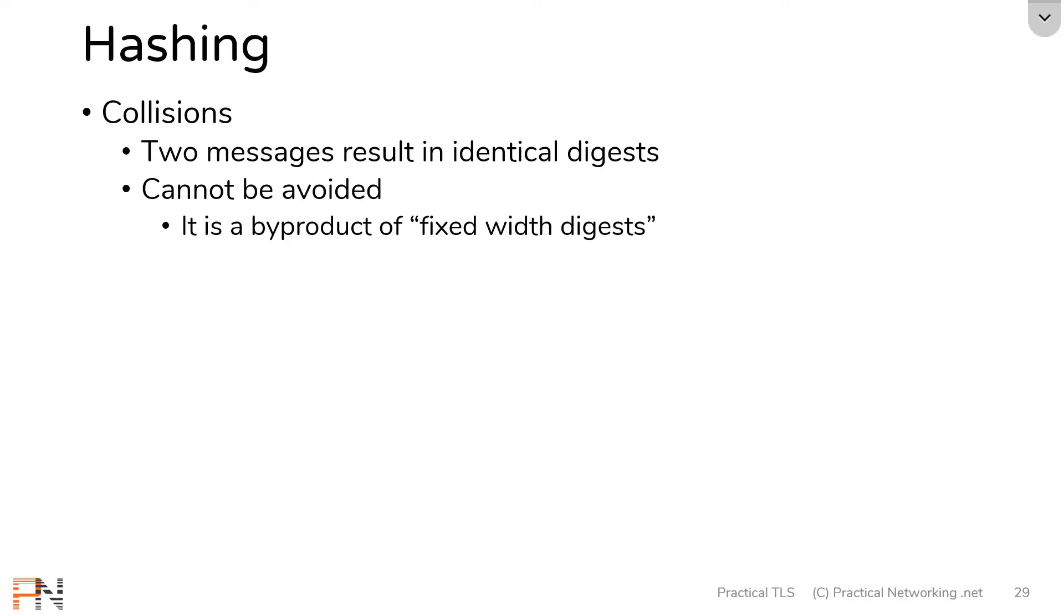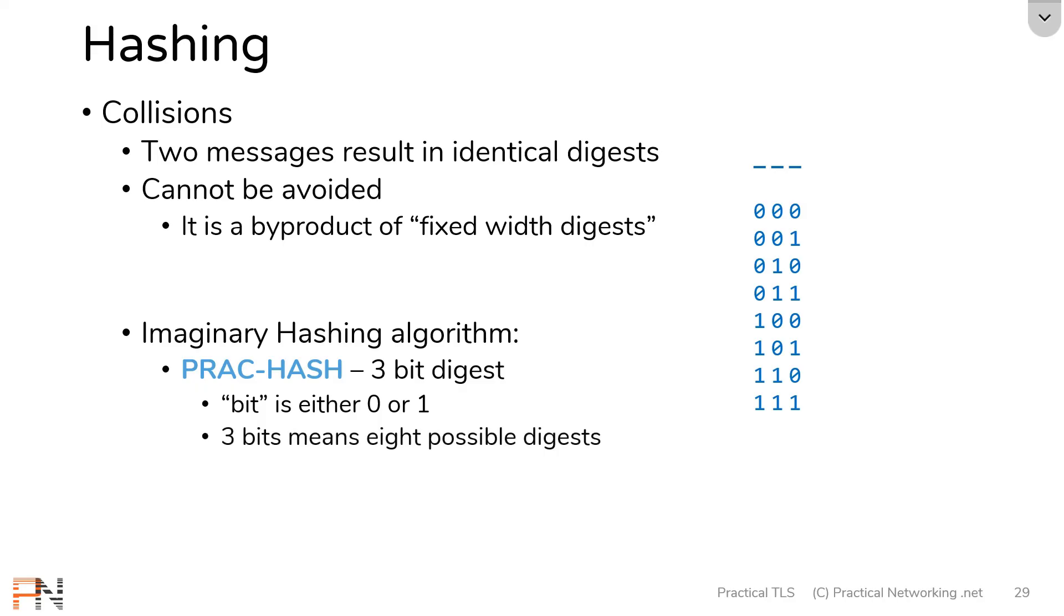Let's make up a new imaginary hashing algorithm. We're going to call it the prac hash. The prac hash is going to create a three bit digest. So what that means, a single bit can be a zero or a one. If I have three of them, that means I have three positions that can each either be zero or one. If we map out every possible combination of three positions of zero or one, you would get this list. It gives you eight possible combinations. Now you could also figure out that you have eight possible combinations by taking two and raising it to the third. Two because there are two possibilities for each character, zero or one, and the third because this is a three bit digest.